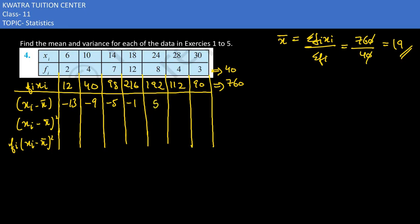Would be 9, here 30 minus 19 is 11. Square, square, square. 13 squared is 169, 9 squared is 81, 5 squared is 25, 1 squared is 1.